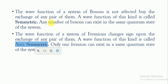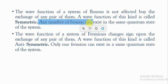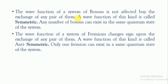Another difference: any number of bosons can exist in the same quantum state of the system, whereas only one fermion can exist in one quantum state of a system. So the differences are: bosons are not affected by exchange of a pair of particles and are symmetric; fermions are affected by exchange and are anti-symmetric; and only one fermion can occupy one quantum state.